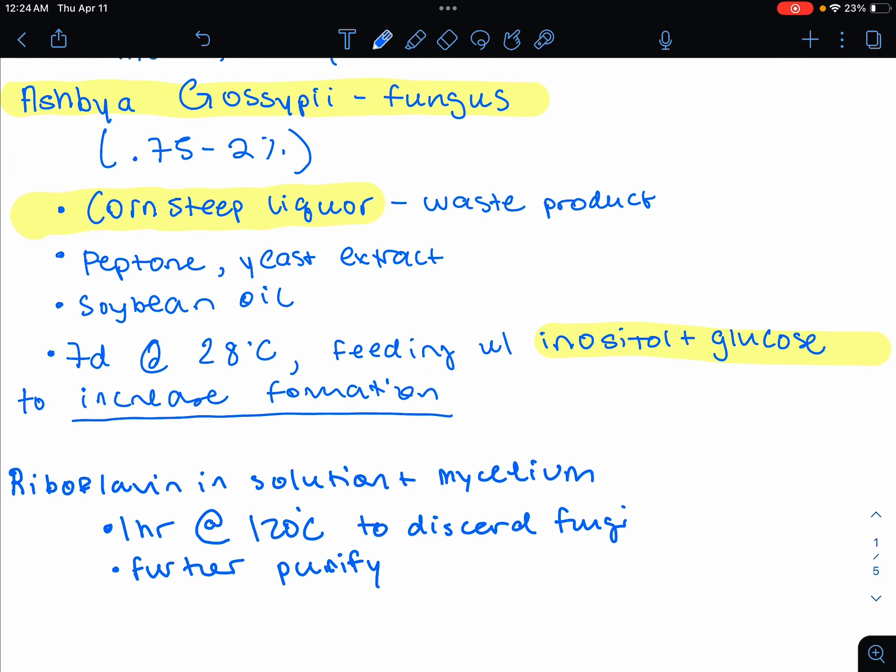We're going to be using corn steep liquor. This is a common carbon source. This is a waste product. Again, we've seen it before. Peptone, as well as distiller solubles, as well as yeast extract, will be our nitrogen sources. Then we also add this soybean oil, which is kind of unique here.